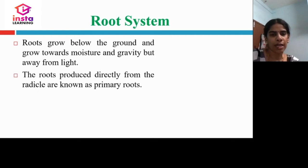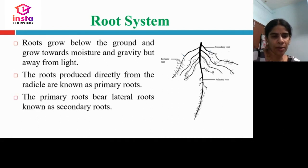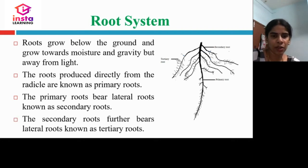The roots are produced directly from the radicle, known as primary roots. Primary roots bear many lateral roots known as secondary roots. Roots are classified as primary roots, secondary roots, and tertiary roots.